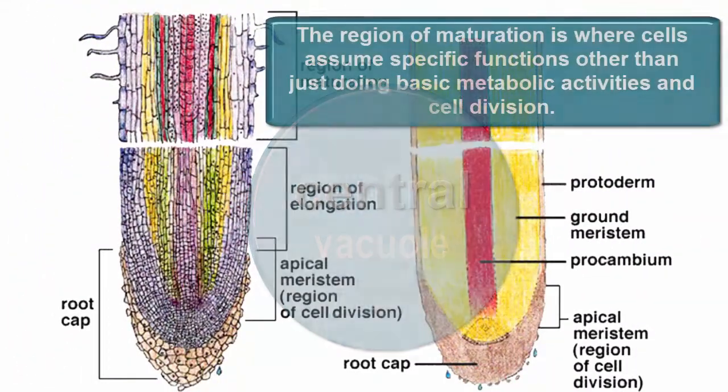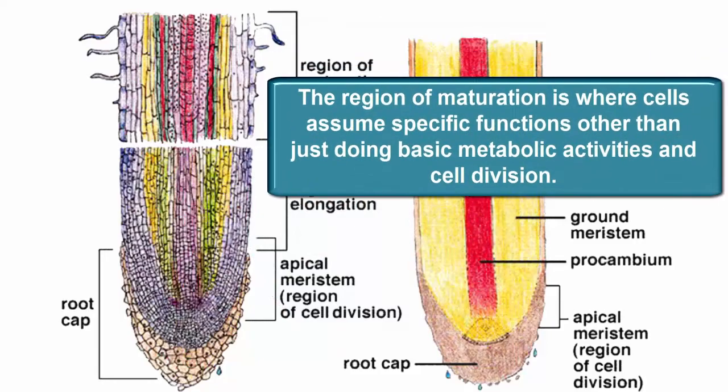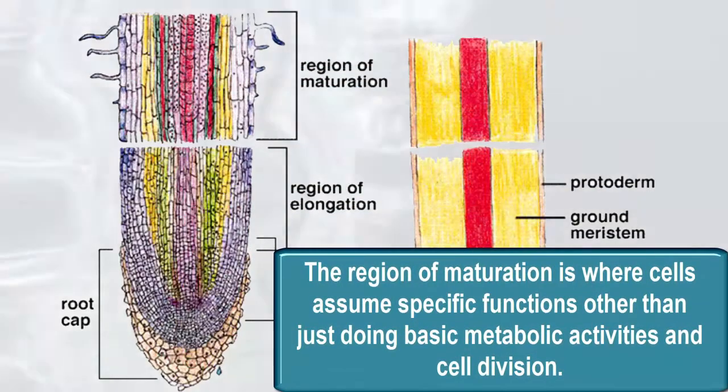The region of maturation is where cells start to differentiate into distinctive cell types and the epidermal cells start to grow root hairs.